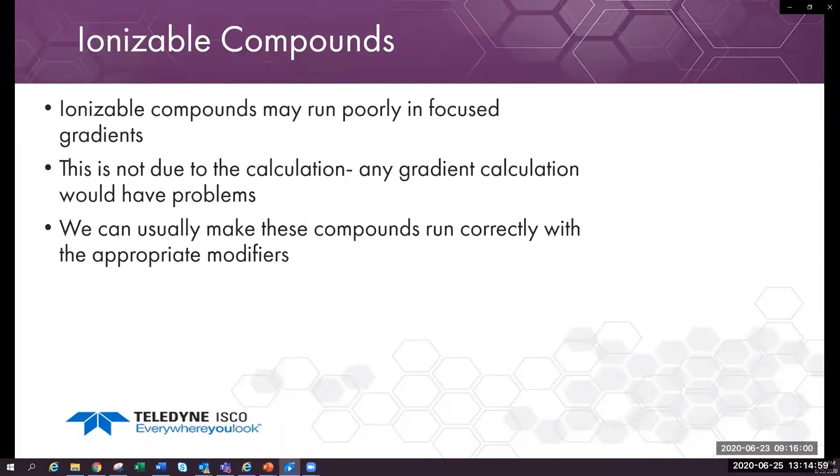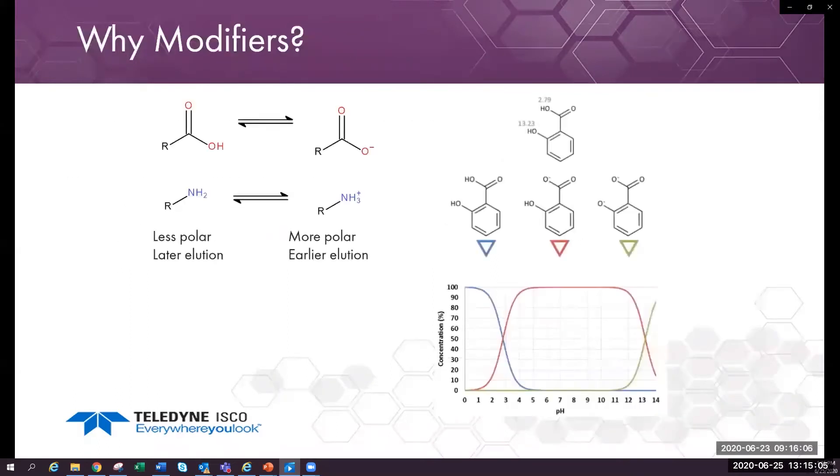We will see how using better pH control may make the retention more predictable. Unionized compounds are less polar and elute later on reverse phase. The graph shows the concentration of salicylic acid ionization states as a function of pH. Modifiers make the solvent system more polar, so neutral compounds might elute just a little later.